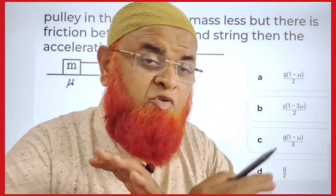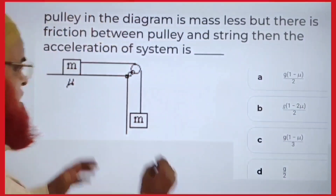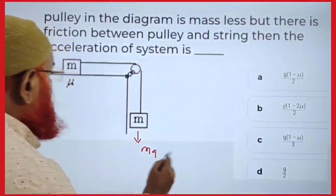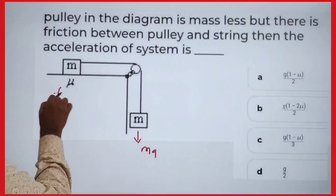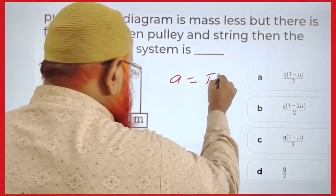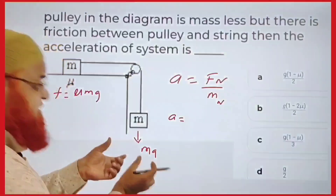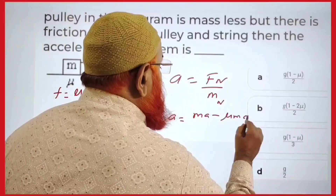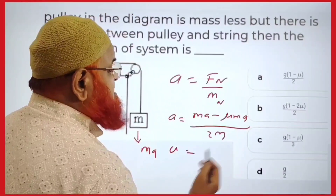My dear friends, how can you solve this problem without using a free body diagram in just 5 seconds? One body of mass M is hanging downwards, taken as Mg. One body is resting on the table having friction, taken as μMG. Acceleration is net force by net mass. Net force means Mg minus μMG, net mass is 2M.